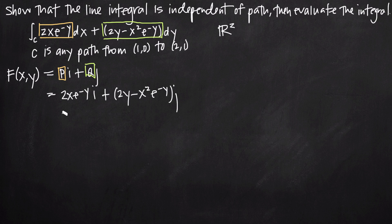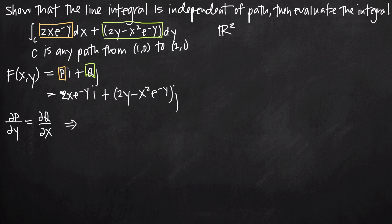Now we need to show that the partial derivative of p with respect to y equals the partial derivative of q with respect to x. Taking the partial derivative of p — which is 2x e to the negative y — with respect to y, we treat x as a constant, so 2x is just a constant coefficient. The derivative of e to the negative y with respect to y brings down the negative sign, giving us negative 2x e to the negative y.